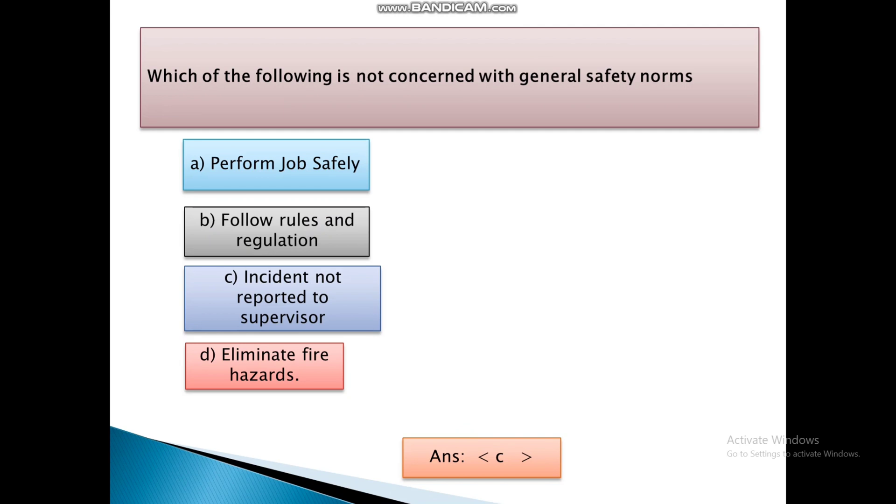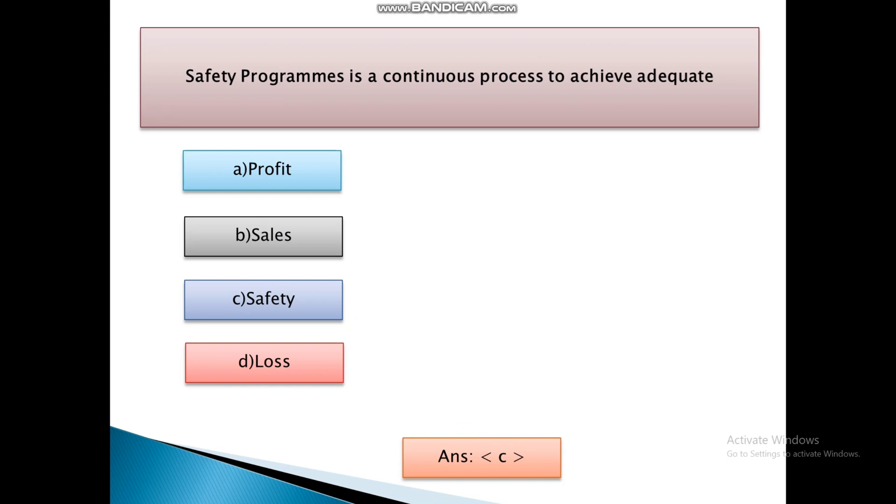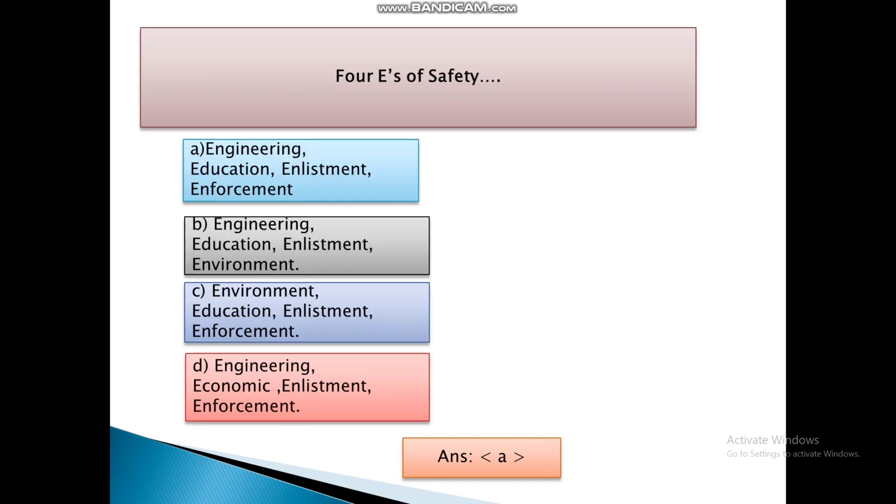Which of the following is not concerned with general safety norms? First, Perform job safely. Second, Follow rules and regulation. Third, Incident not reported to supervisor. And Fourth, Eliminate fire hazards. And the answer is C, that is incident not reported to supervisor. Safety programs is a continuous process to achieve adequate: first, profit. Second, Sales. Third, Safety. And Fourth, Loss. And the answer is C, that is safety.